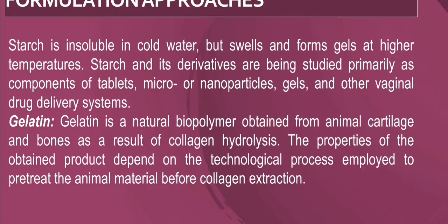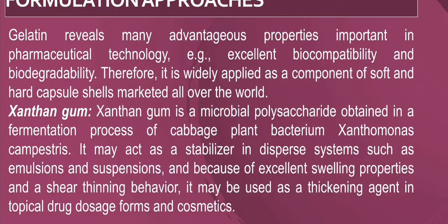Gelatin is a natural polymer obtained from animal cartilage and bones, and has properties suitable for vaginal drug delivery. It has excellent bioavailability and biodegradability and is also used for soft and hard gel capsules. Xanthan gum is a microbial polysaccharide obtained from the fermentation of Xanthomonas campestris. It acts as a stabilizer used in emulsions and suspensions, contains swelling properties, and is used as a thickening agent in topical dosage forms.